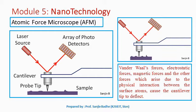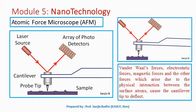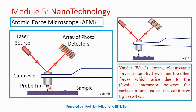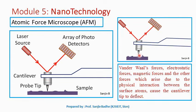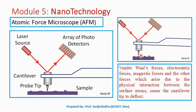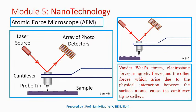The atomic force microscope works on the idea of producing an image by physically pushing a cantilever tip against the sample. The tip movement of this cantilever is analyzed and converted into a three-dimensional image of the sample surface.